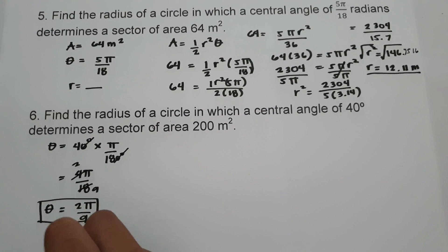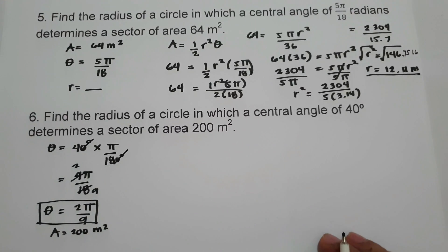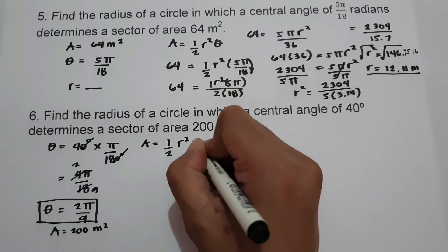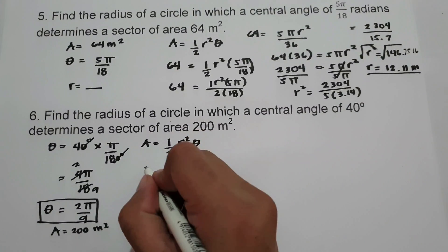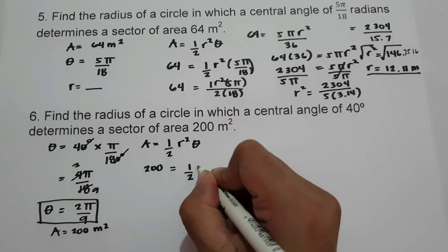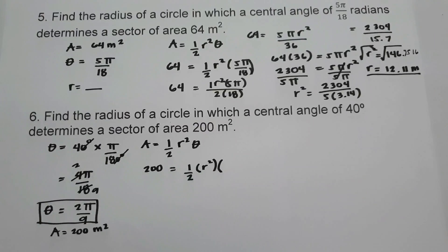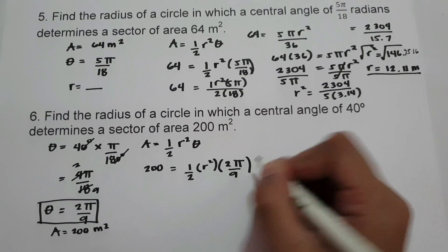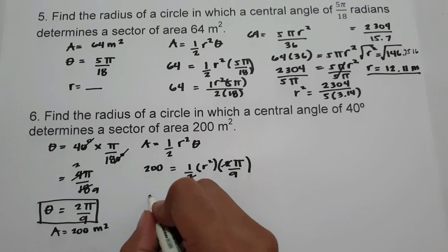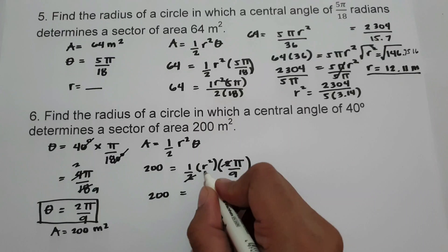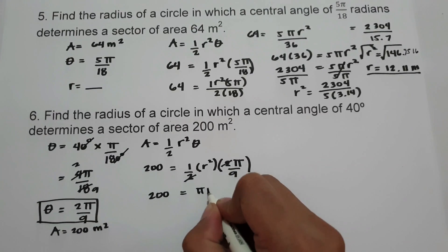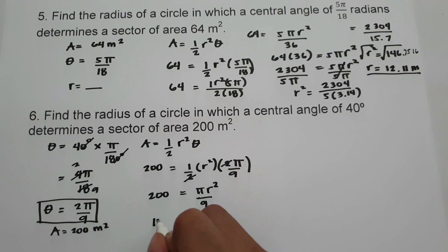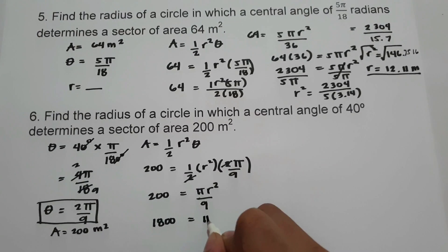The area is 200 meter square. Using the formula area equals 1 half r squared theta, we substitute: 200 equals 1 half times r squared times 2 pi over 9. Simplifying, the 2 in the numerator and the denominator cancel, giving 200 equals pi r squared over 9. Multiplying both sides by 9, we get 1,800 equals pi r squared.